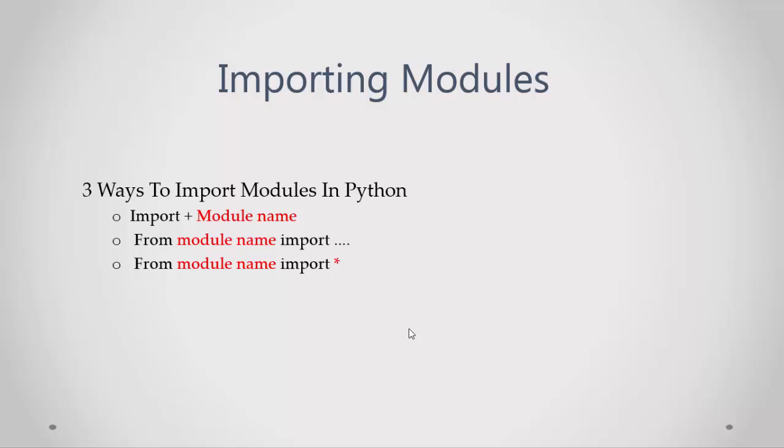And the third way, from module name import asterisk, just to import everything in this module. If we write from os import asterisk, then we can now work with all functions and classes in this module.